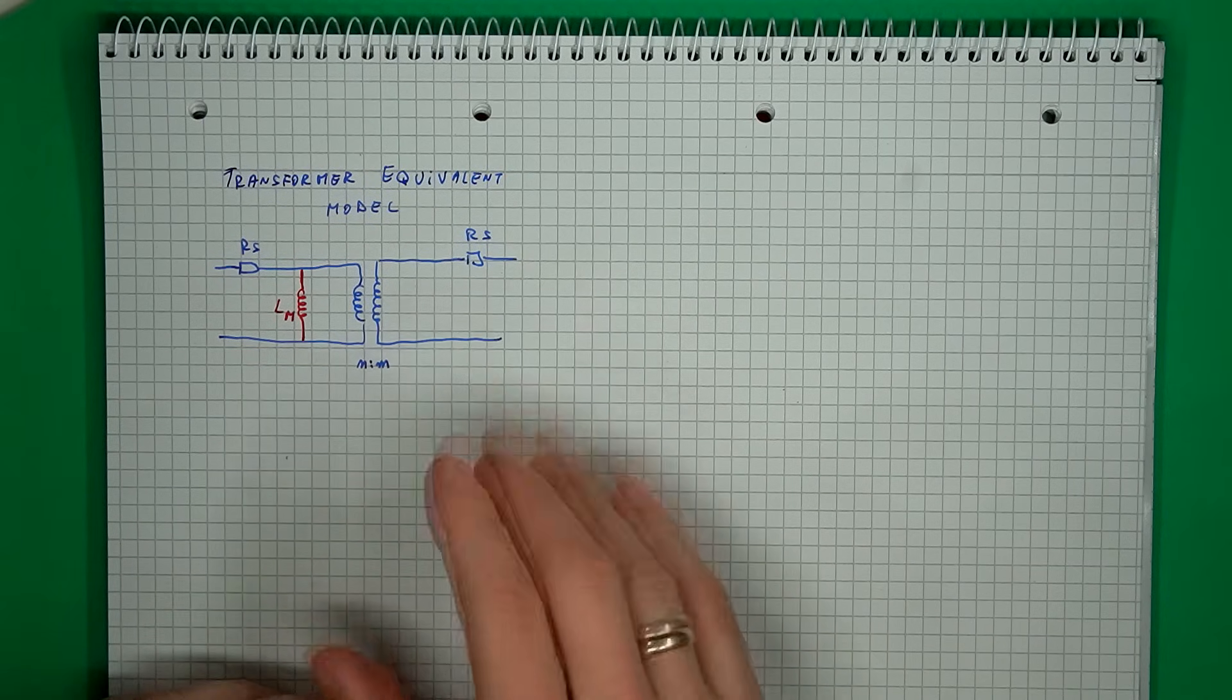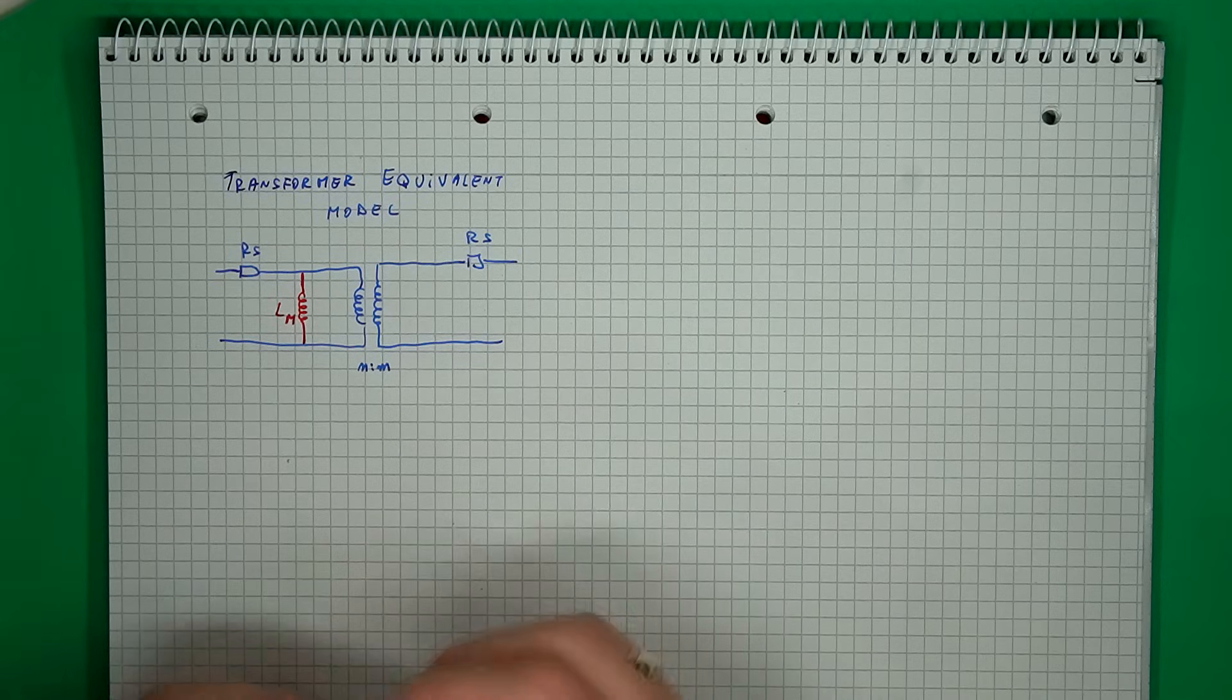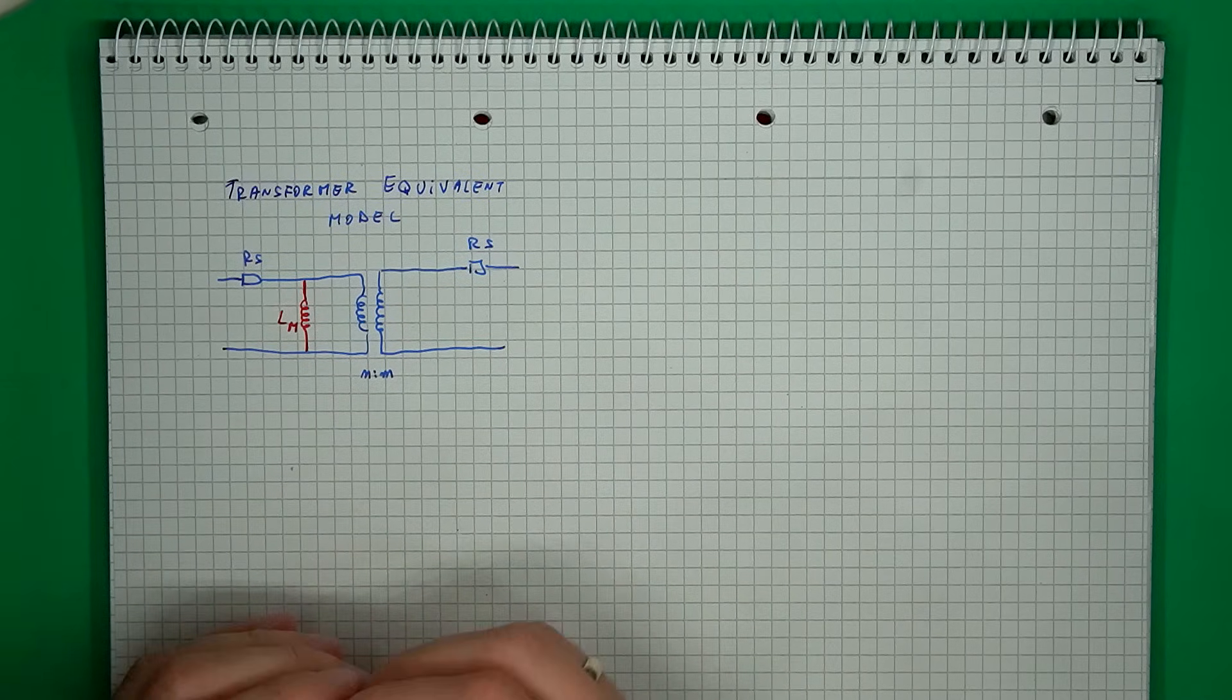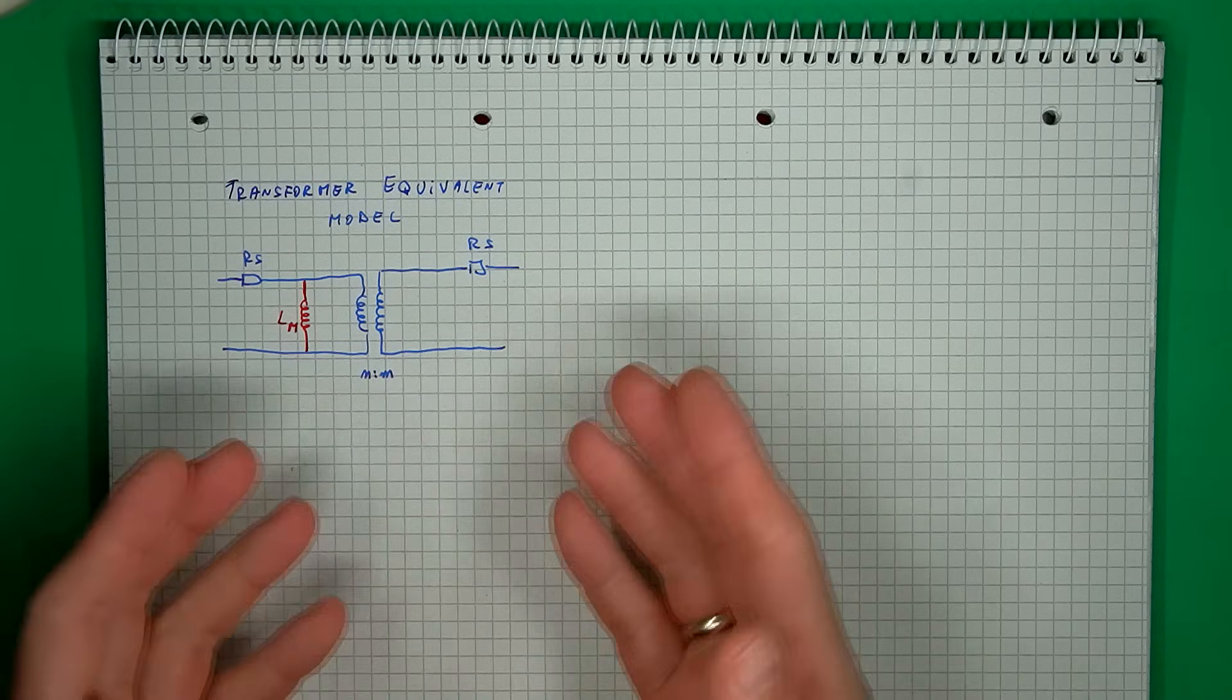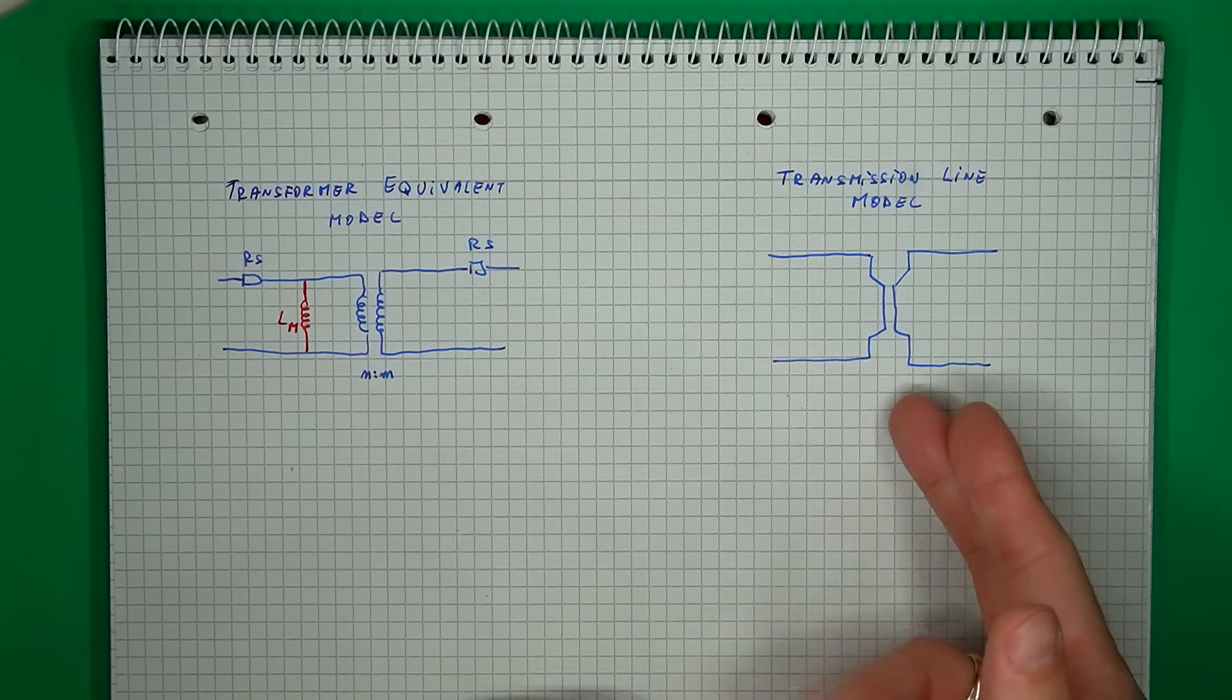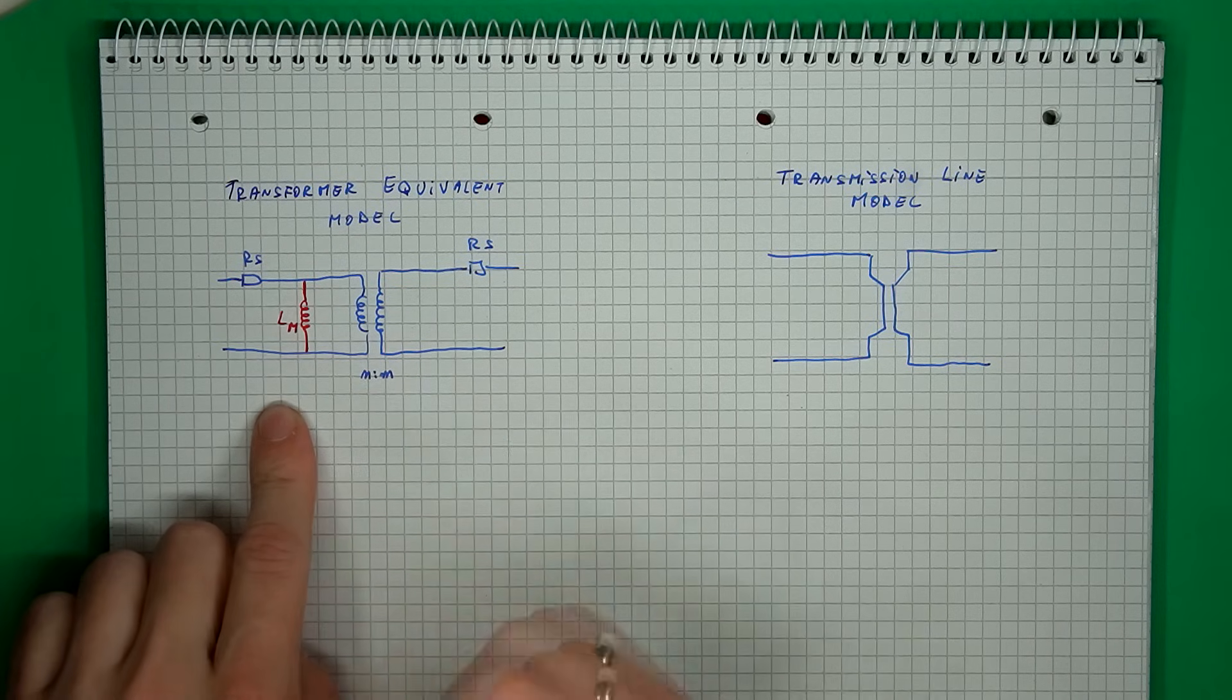In the equivalent model of a transformer, usually you will add an ideal coupled transformer. This is responsible for taking energy from one side to the other, but this by itself is not frequency limited. The limiting element is the magnetizing inductance on the primary, which is the uncoupled inductance of the winding. So at very low frequency, this inductor is shorting the input signal and not letting any energy get to the ideal coupled bit that pushes energy to the other side. Now, if we look to the transmission line model, well, this just contains the ideal bit, the two coupled lines.